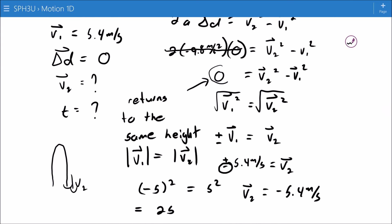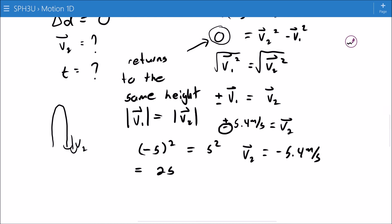So because the displacement was zero, it returned to the same height. That meant that V2 and V1 were very similar. They're almost the same. They have the same size, but the direction has changed. We get the directional change because we square root and it could have been the plus or the minus. In this particular situation, we want the minus because it's going down. But what's interesting here is the magnitude of the velocities is the same, just not their direction.